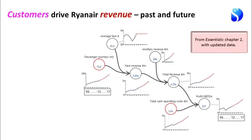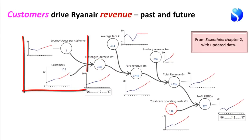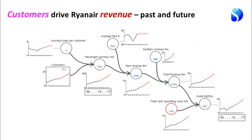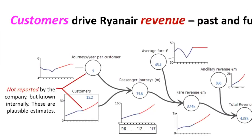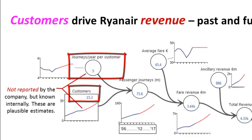Here is the history of the company's actual sales of passenger journeys and the average fare it's been charging, with plausible projections. Now here's the critical question which conventional analysis doesn't usually deal with: where does that number of passenger journeys come from? It comes from the number of customers who use the airline and the frequency with which they use it. That number — customers multiplied by journey frequency — is not reported by the company. These are plausible estimates. Crucially, 75.8 million people flying once per year is not the same as 15.2 million people flying five times per year — that difference is very important.